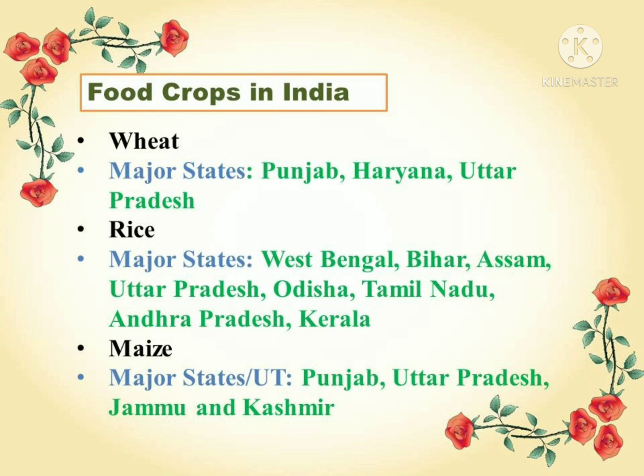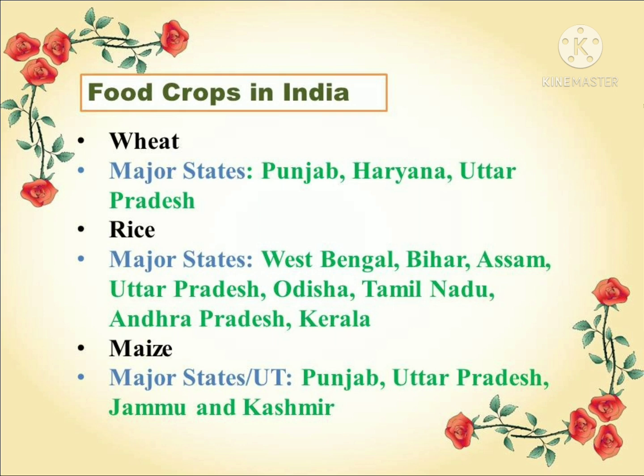Wheat is grown in Punjab, Haryana, and Uttar Pradesh. Rice is grown in the states of West Bengal, Bihar, Assam, Uttar Pradesh, Odisha, Tamil Nadu, Andhra Pradesh, and Kerala. Maize is grown in states and one Union Territory — states are Punjab and Uttar Pradesh, and the Union Territory is Jammu and Kashmir.